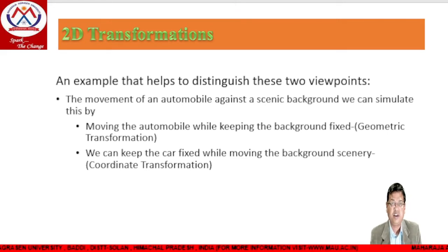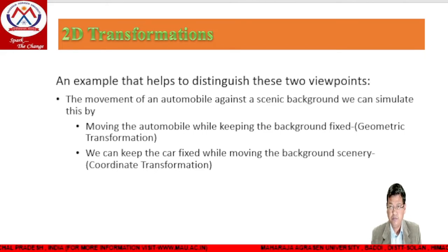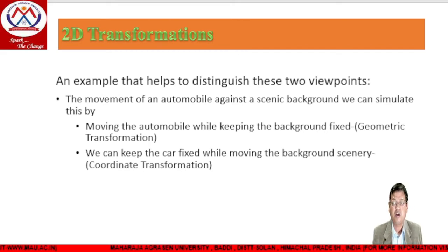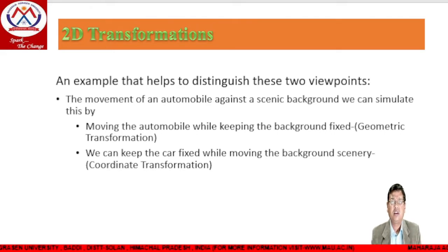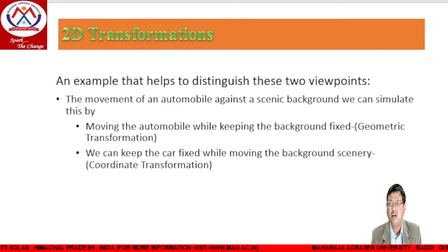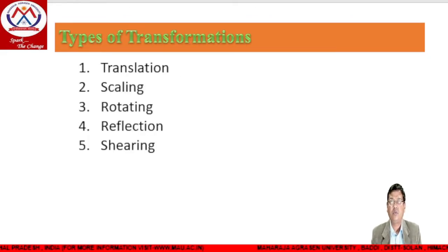A real-time example: suppose we observe the movement of an automobile against a scenic background. If the automobile is moving and the background is fixed — object is dynamic, background is fixed — it comes under geometric transformation. While if the object is stable and the background is dynamic — the background scenery is moving and the car is stable — then it is called coordinate transformation.